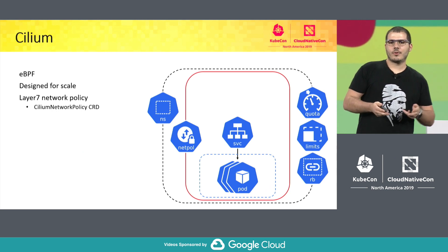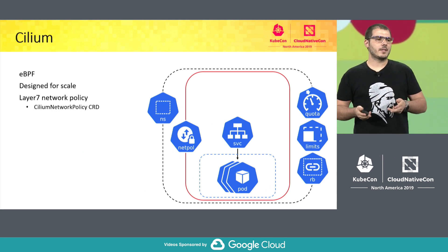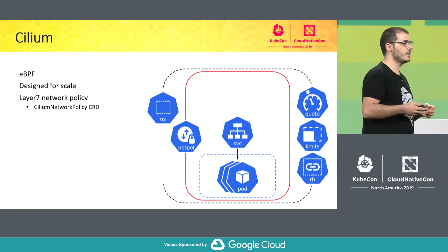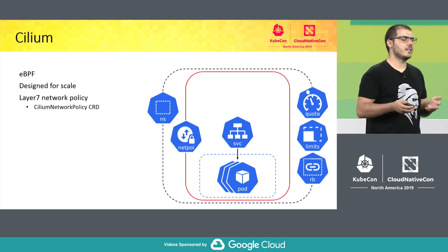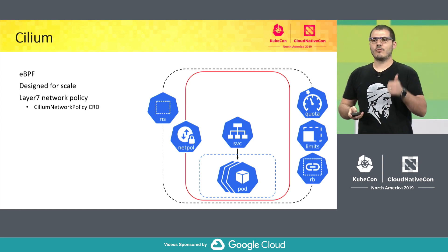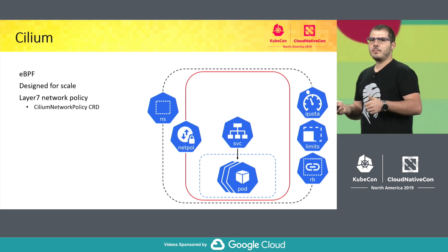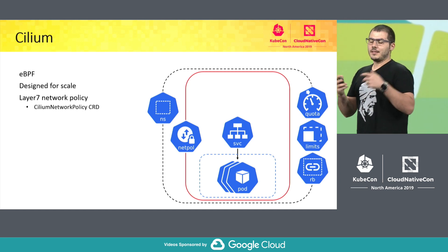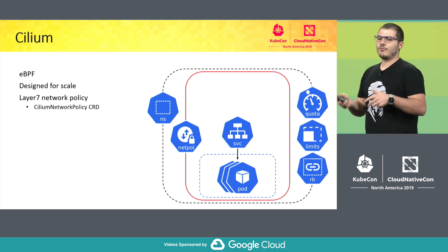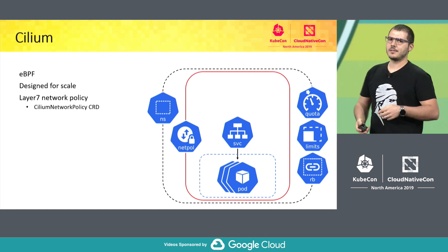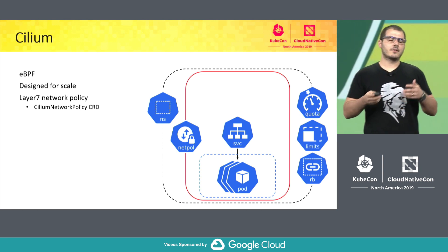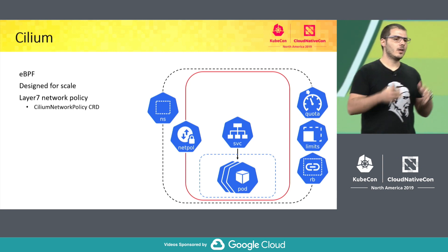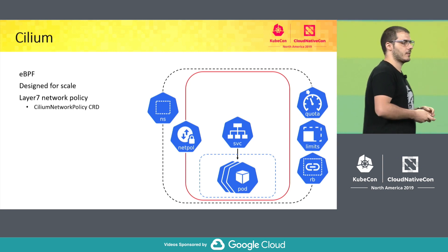Once we are onboarded into Ethos, we can deploy an application that has basic isolation in the cluster. For network policies, we rely on Cilium CNI, which has interesting features: it provides out-of-the-box eBPF that improves both network speed and security of the pods. It is designed to scale, which is necessary for larger multi-tenant clusters, and we can create layer-7 policies over HTTP or gRPC protocol, which is mandatory in a microservice ecosystem.